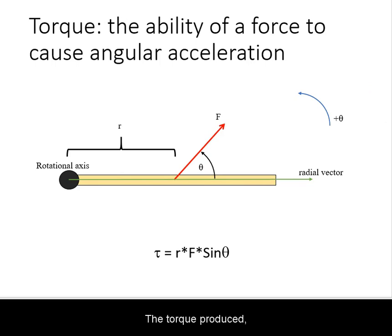The torque produced by an acting force has a magnitude that is the product of the radial distance at which the force is applied, the magnitude of the force, and the sine of the angle from the radial vector to the force vector.